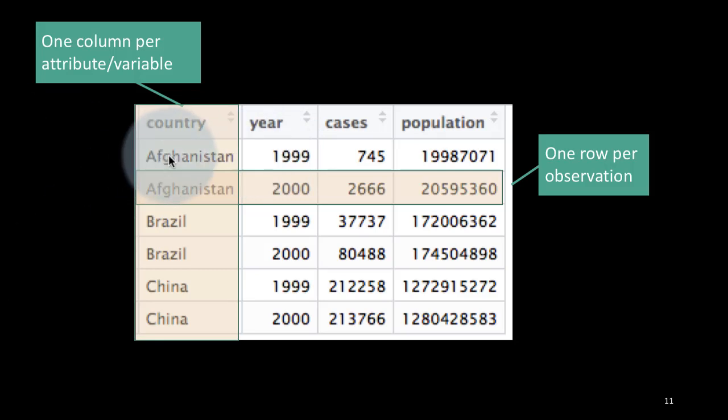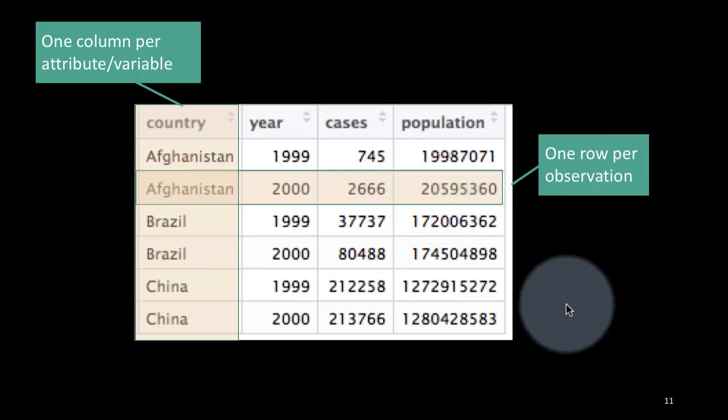Then in this data, we've got each row representing one entity of interest, which is Afghanistan in 1999, Afghanistan in 2000. And then you've got some other attributes that describe that central entity, so cases and population. So in that sense, we've got one row per observation, where each observation stands for an entity of interest. And in this case, the entity of interest is the country-year combination.